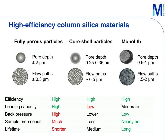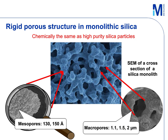Let's take a closer look at the silica monolith structure. Here is a scanning electron microscopy image of a silica monolith. Chemically, it is exactly the same as high-purity silica particles. Structurally, instead of being a spherical particle, think of it as a piece of rigid coral — highly porous structures for mobile phase to pass through. These pores are called macropores and can be as large as 2 microns, allowing rapid flow of mobile phase at low back pressures. On the skeleton structure we also have mesopores, which provide large uniform surface area where adsorption takes place and enable high-performance separations.